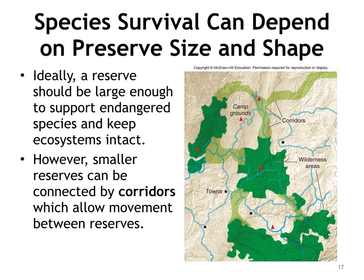For some species with small territories, several small isolated refuges can support viable populations, and having several small reserves provides insurance against disease, habitat destruction, or other calamity that might wipe out a single population. But small preserves can't support species such as elephants or tigers, which need large amounts of space. Given human needs and pressures, big preserves aren't always possible. One proposed solution has been to create corridors of natural habitat that connect smaller habitat areas, effectively creating a large preserve from several small ones, and allowing populations to maintain genetic diversity or expand into new breeding territory.